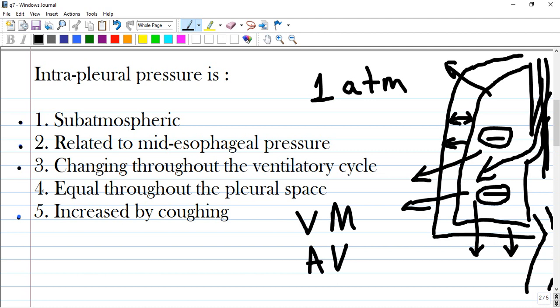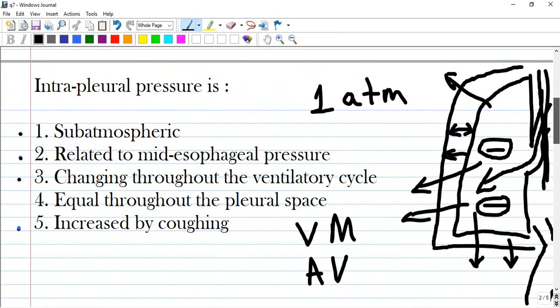Equal throughout the pleural space - respiration can be by two types: one is predominantly diaphragmatic or abdominal, and second is thoracic type which involves mostly thoracic muscles. Increased by cough - a cough produces pressure by constriction of the thorax and increased flow of oxygen out.